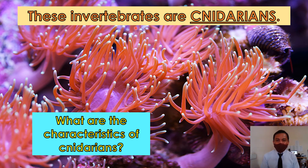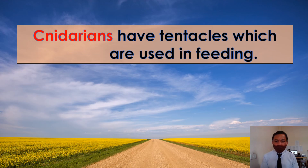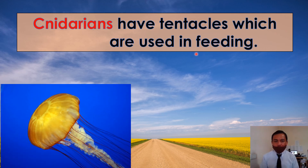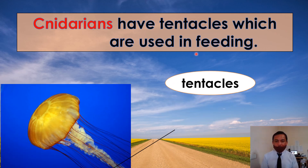These invertebrates are cnidarians. What are the characteristics of cnidarians? Cnidarians have tentacles, which are used in feeding. Look at the picture — these are the tentacles.